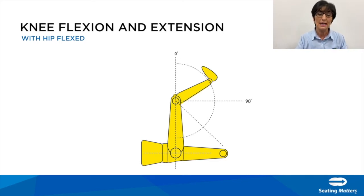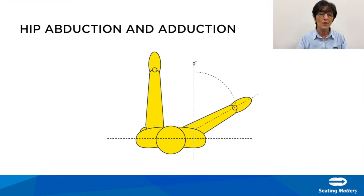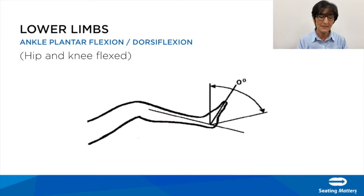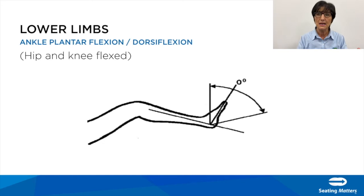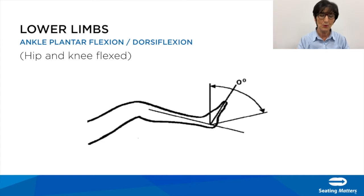We also look at hip abduction and adduction — is it fixed or flexible, and where do we need to set it to maintain good posture in the chair? Then with the hip and knee flexed, look at the ankle: plantar flexion and dorsal flexion. The importance is that you need to load the feet — 19% of the body weight goes through the feet. On our chairs we have the ability to accommodate plantar and dorsal flexion by adjusting the foot plate.